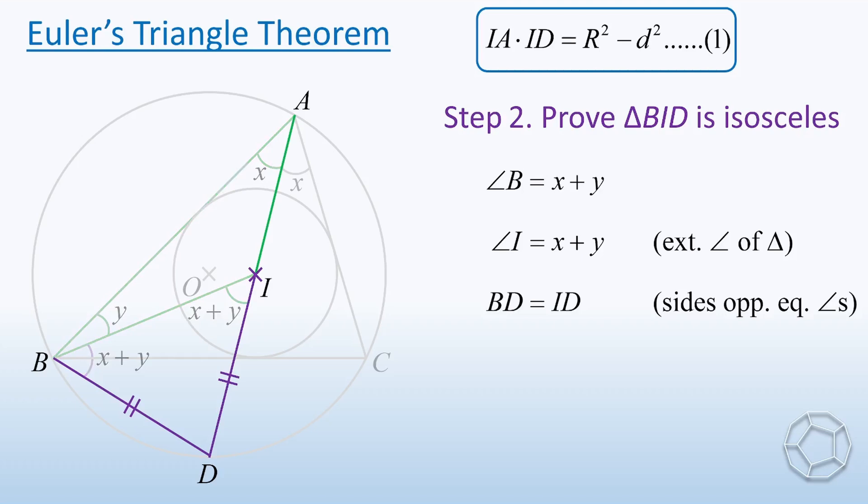We can put this result into equation one. That is, IA times BD is equal to R² minus d². Let's call this equation two. Great! We are just one step away to finish the proof.